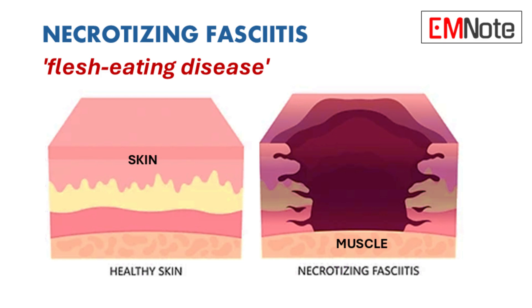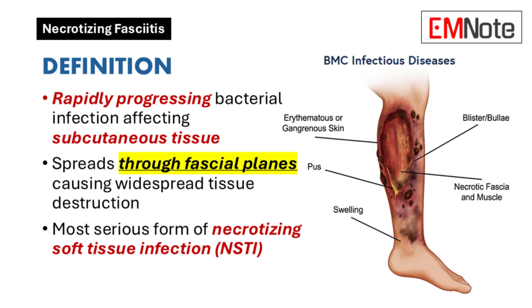Necrotizing fasciitis is a rapidly progressing bacterial infection that affects the subcutaneous tissue. It spreads aggressively through the fascial planes, leading to widespread tissue destruction. Necrotizing fasciitis represents the most serious form of necrotizing soft tissue infection and can occur in any body part.